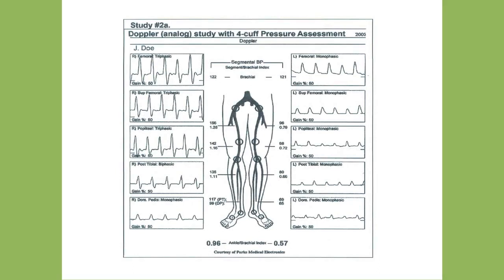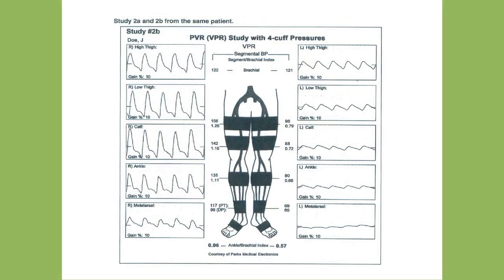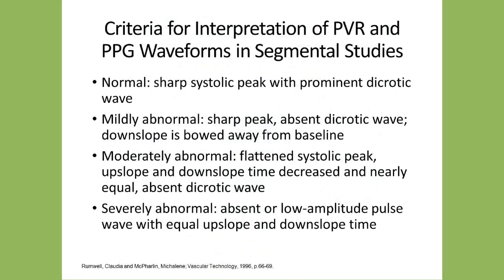In a four-cuff technique example: John Doe has an ABI of 0.96 on the right and 0.57 on the left. Right-side waveforms are essentially normal throughout. On the left, the femoral waveform is abnormal, suggesting iliac or common femoral disease. Waveforms below that level remain consistent, indicating no multi-segment disease. On pulse volume recordings for the same patient, the right side is normal; on the left, thigh pressure is abnormal and waveforms are rounded and remain abnormal through all levels, consistent with inflow disease on the left and a normal right leg.